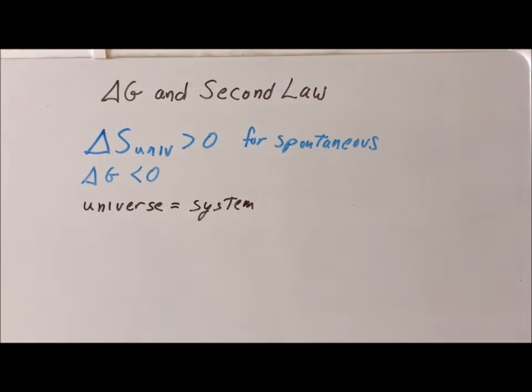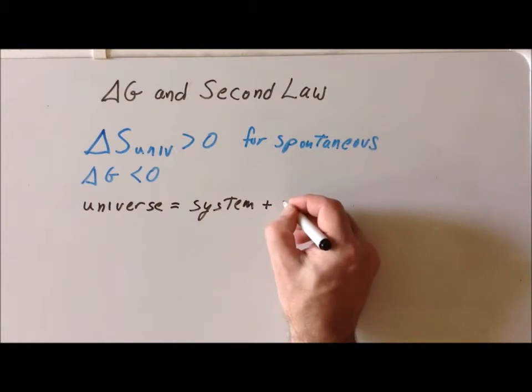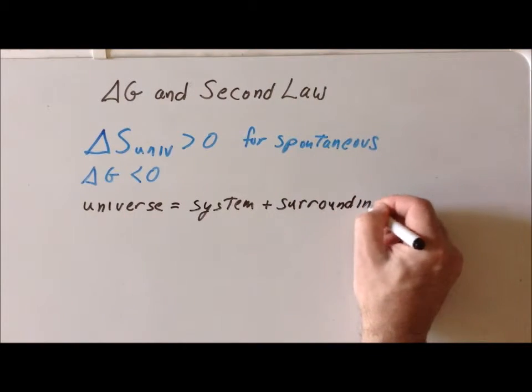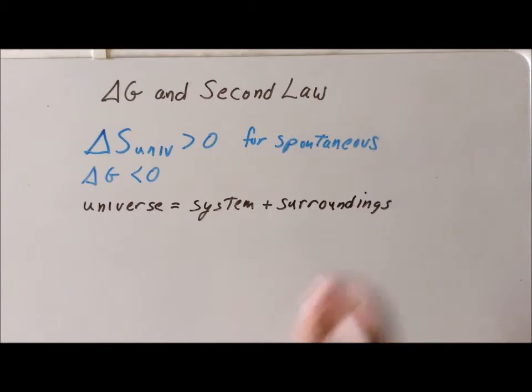And this system is just the part of the universe that we care about as a chemist. Everything else we call the surroundings. So this distinction between the system and the surroundings is a very useful one for chemists and will become incredibly important once we start talking about the second law.